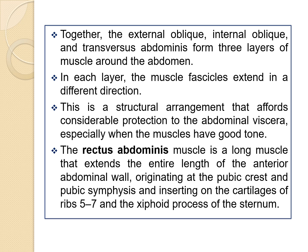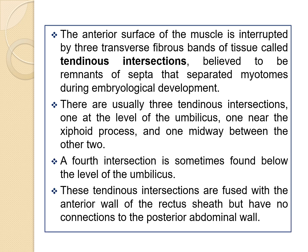The rectus abdominis is the long muscle that extends the entire length of the anterior abdominal wall, originating at the pubic crest and pubic symphysis and inserting on the cartilage of ribs 5 to 7 and the xiphoid process of the sternum. Its anterior surface is interrupted by three transverse fibrous bands of tissue called tendinous intersections, believed to be remnants of septa that separated the myotomes during embryonic development. There are usually three tendinous intersections: one at the level of the umbilicus, one near the xiphoid process, and one midway between the other two. A fourth intersection is sometimes found below the level of the umbilicus.